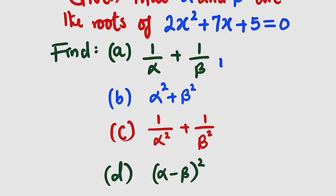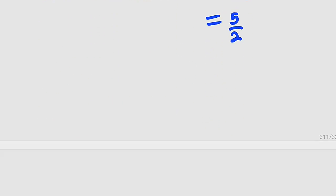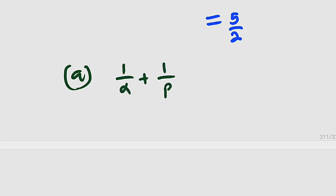Let's start with the first one: 1 divided by alpha plus 1 divided by beta. Remember, we only have the sum and the product. Every expression given to you, you have to transform it in terms of the sum and the product. That's what we are going to do now.